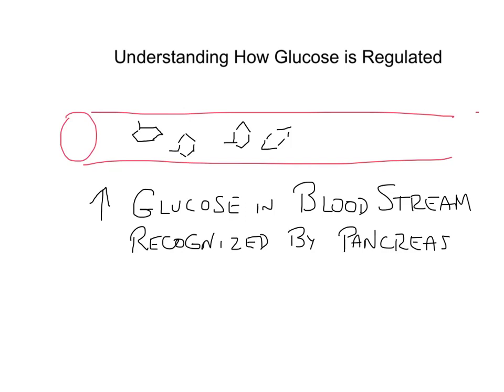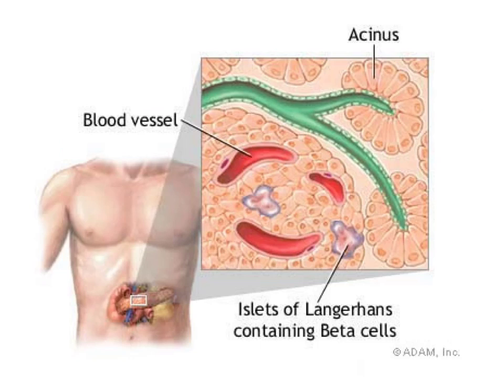In this picture, what I've drawn is a blood vessel. With increasing amounts of glucose in the bloodstream, that gets recognized by the pancreas. The pancreas, as shown here in a picture, is an organ that sits basically underneath your liver, and it has cells called the islets of Langerhans, and the islets of Langerhans contain beta cells. It's the beta cells that recognize the increase in sugar brought to it by blood vessels that supply the pancreas.